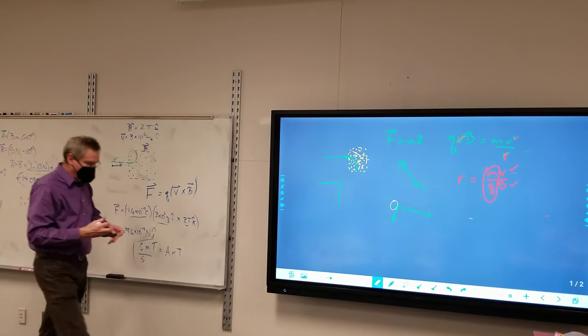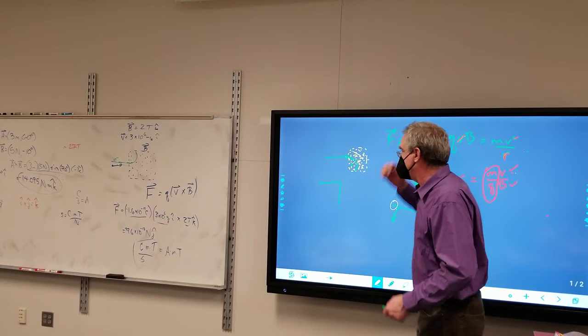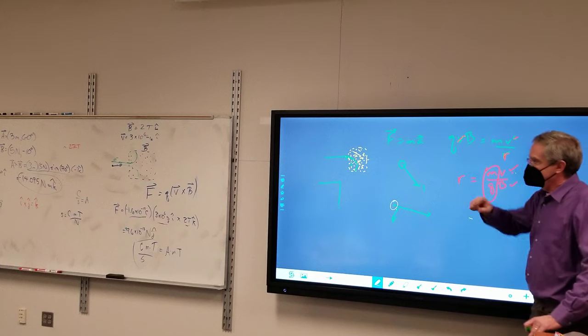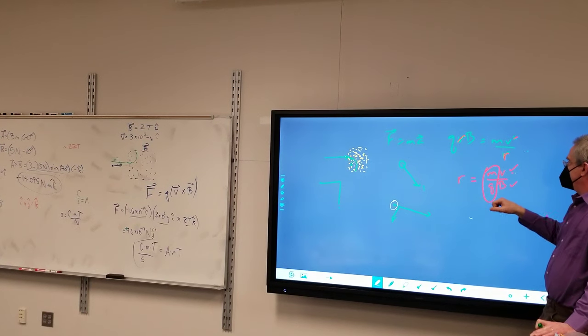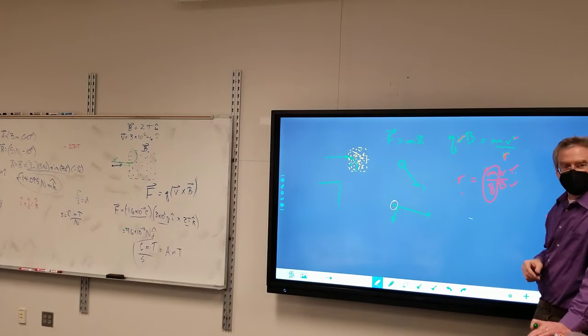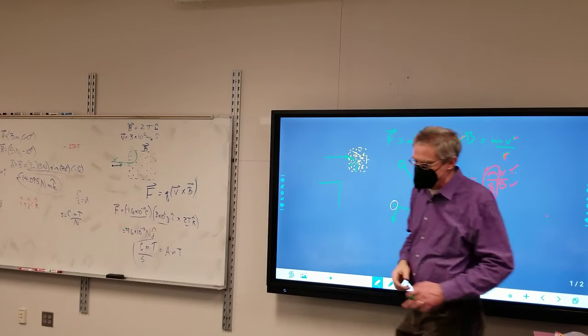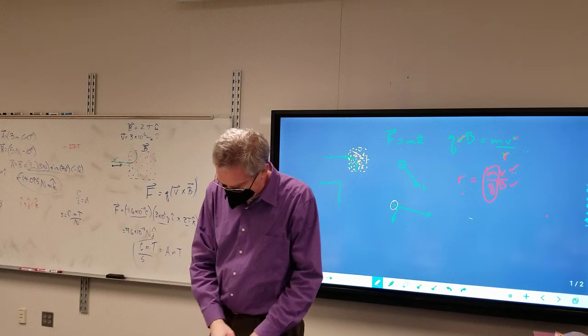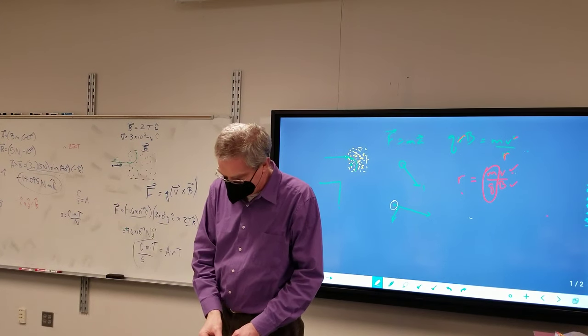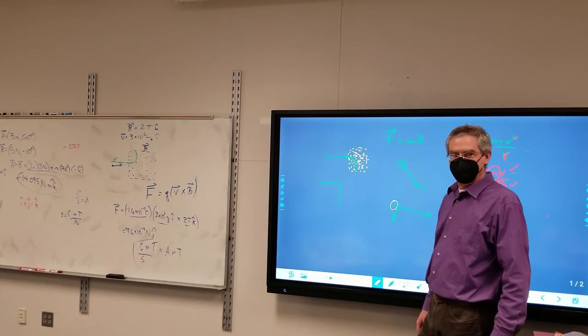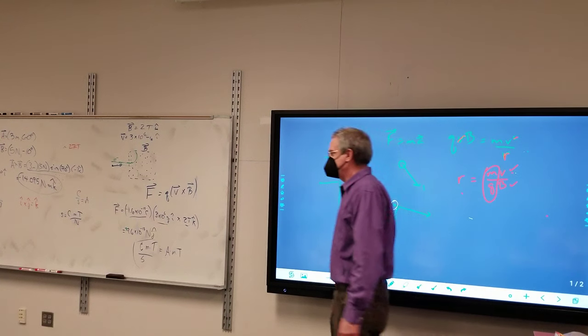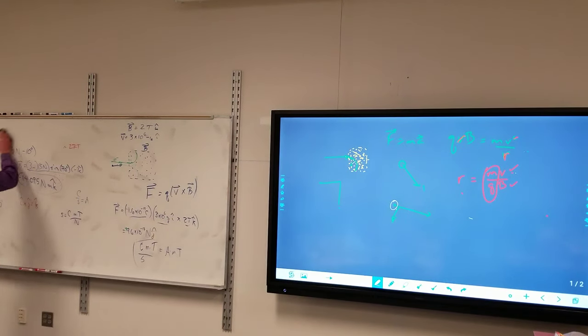And so when I'm trying to identify a particle based upon this, I shoot it through the magnetic field. If it bends one way, it's negative. It bends the other way, it's positive. I look at the radius, and I can come up with a value for the mass-to-charge, and so I can have a pretty good idea of what particle it is. Questions here? Because we're about to make it look more complicated, or simpler, depending on how you're taking it.